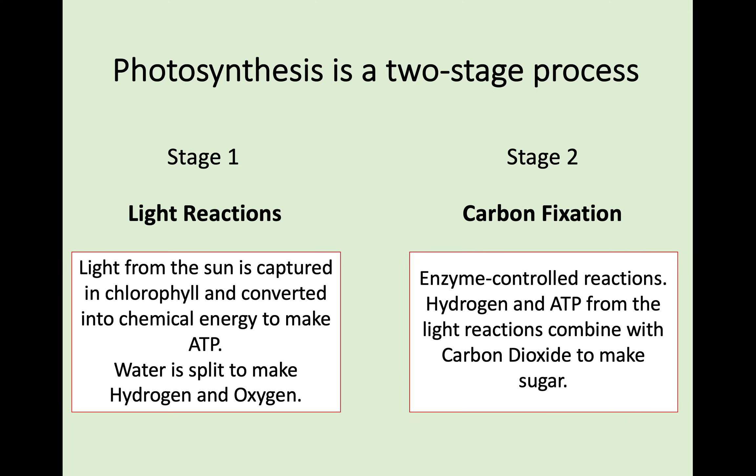The hydrogen and the ATP produced in stage 1 are then used in stage 2, which is known as carbon fixation. Carbon fixation involves carbon dioxide — hence the name. One of the really important parts of stage 2 is that carbon fixation is a series of enzyme-controlled reactions, which use hydrogen and ATP from the light reactions, along with carbon dioxide from the atmosphere, in order to make sugar — the end point of photosynthesis.